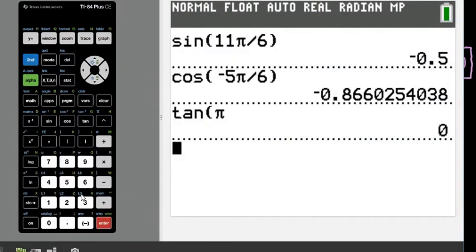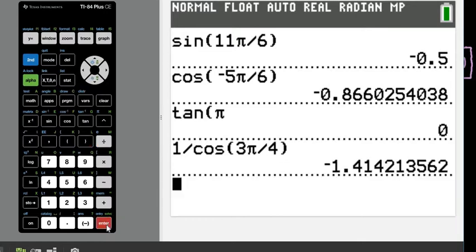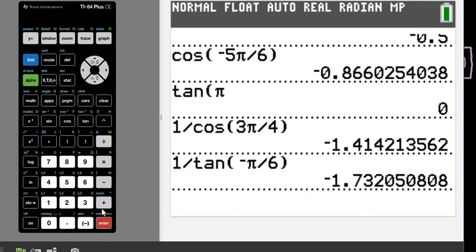So now we're going to do secant, cotangent, and cosecant. All right, so our next one is secant 3 pi over 4. Remember for this one, we would do 1 divided by cosine of 3 pi divided by 4. And this ends up giving us negative 1.4142. So again, this would be a decimal approximation. The next one that we had is cotangent of negative pi over 6. So we would write this as 1 divided by tangent of negative pi over 6. And then the last one that we had was cosecant, which would be 1 divided by sine of 5 pi over 6.